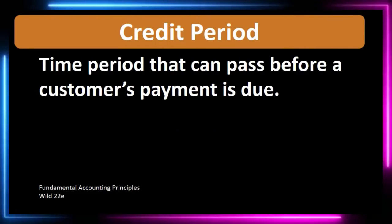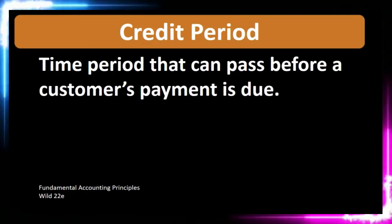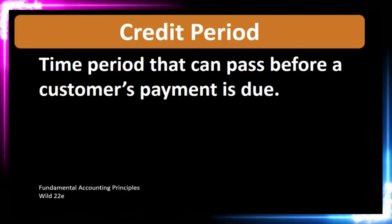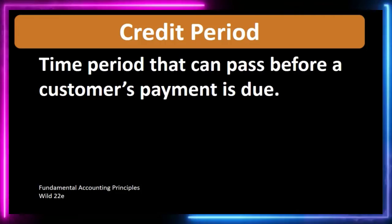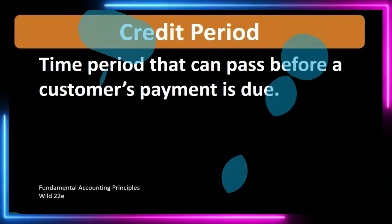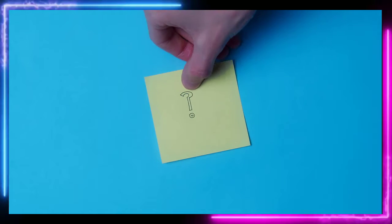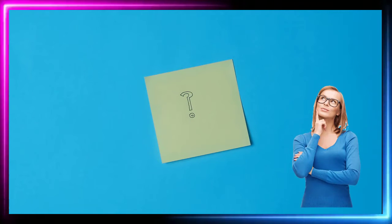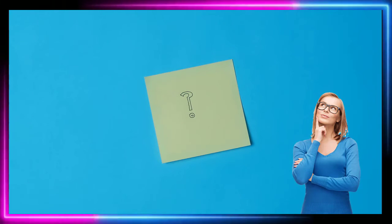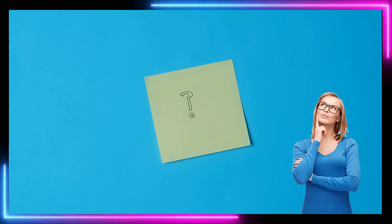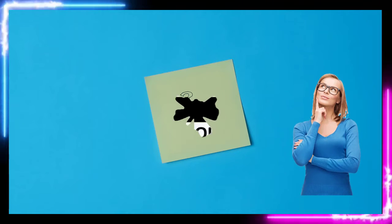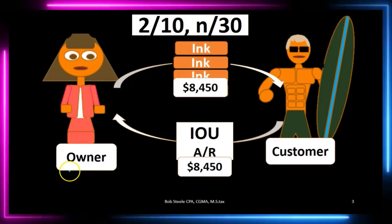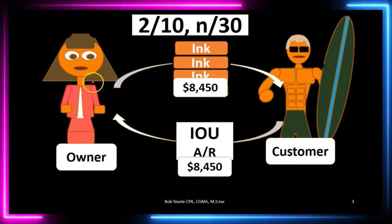We're talking about the terms that would happen at the point of sale. If we made a sale on account, meaning we have accounts receivable, we need to know when that receivable is going to be received. That would be the credit period — how long we have between the sale and the point in time that we want to receive payment from the customer.